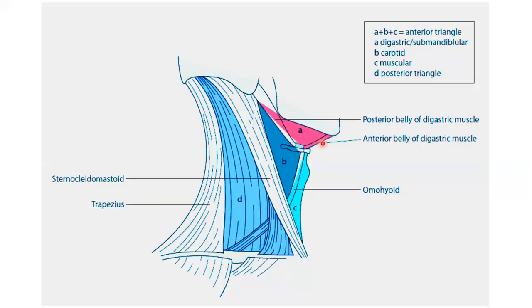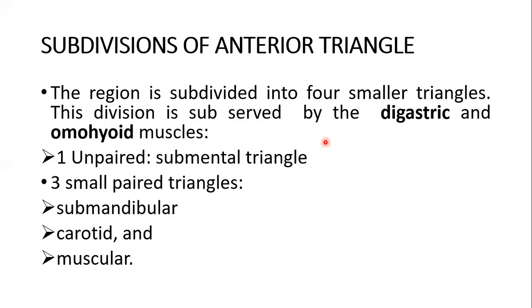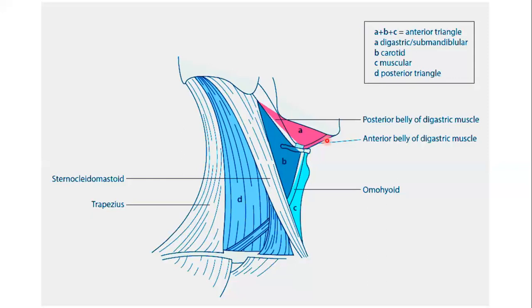The first is the submental triangle — it is single, not a pair. It lies on the median line. The second is the digastric or submandibular triangle. The carotid triangle and the muscular triangle complete the four. We will discuss each triangle separately.